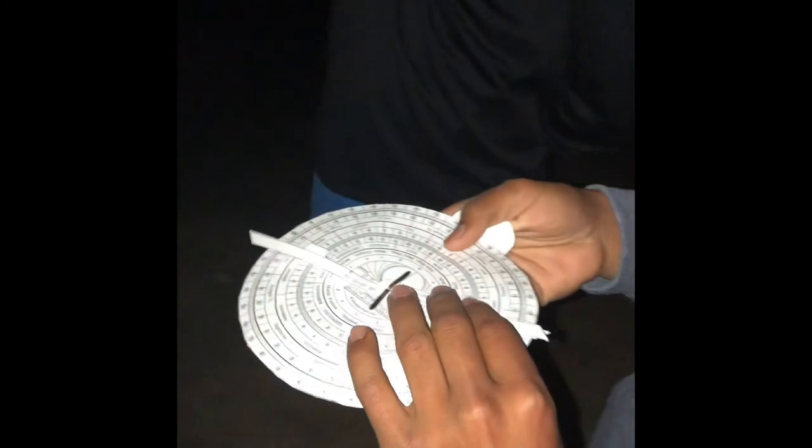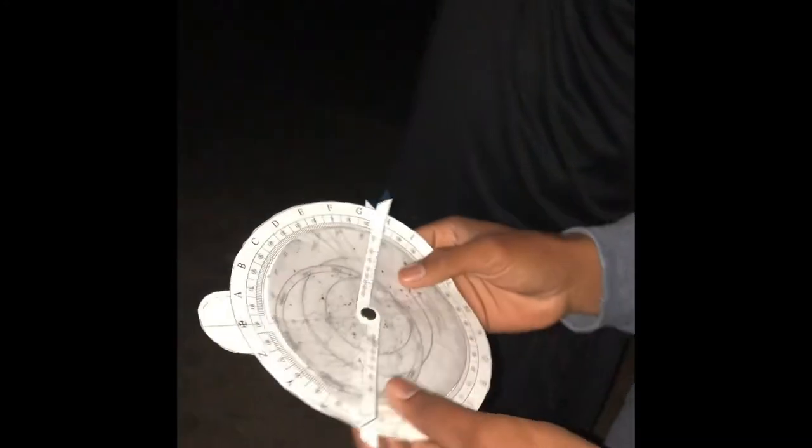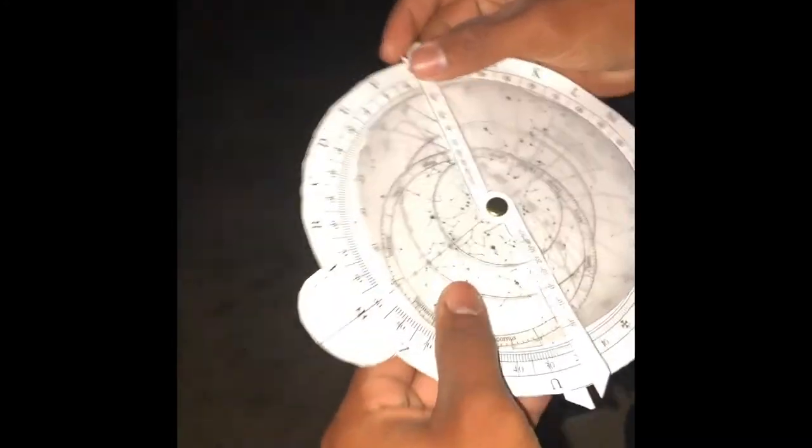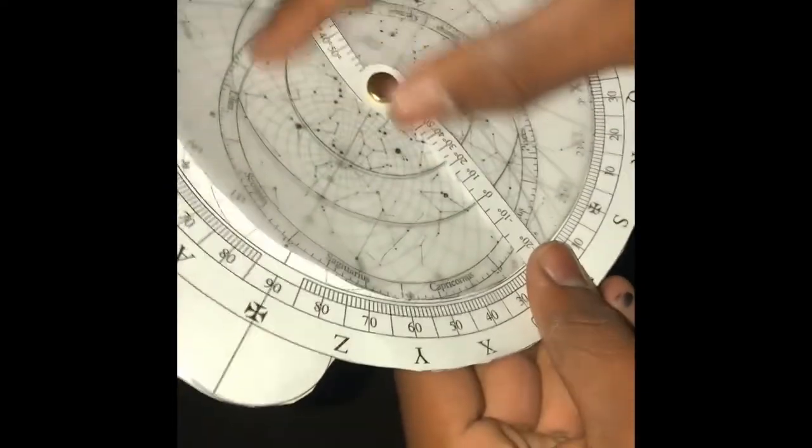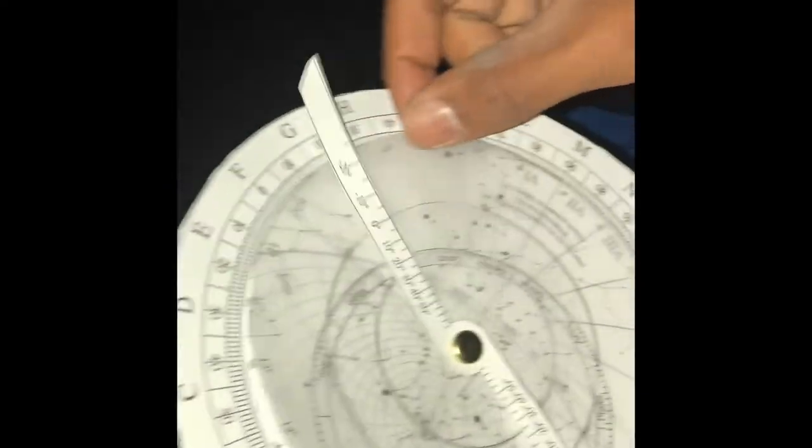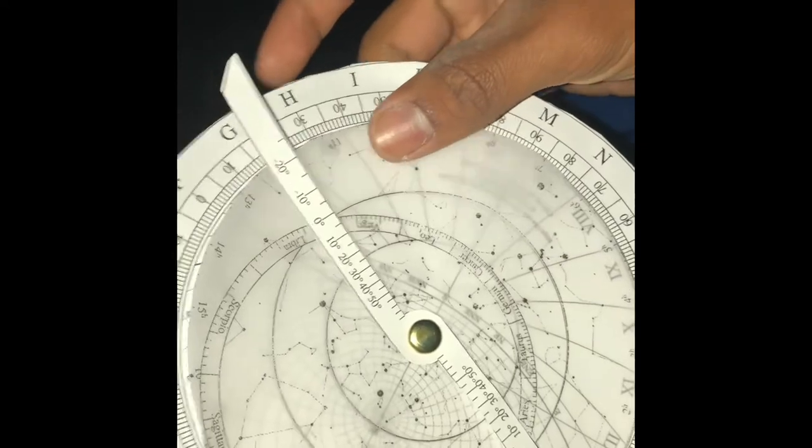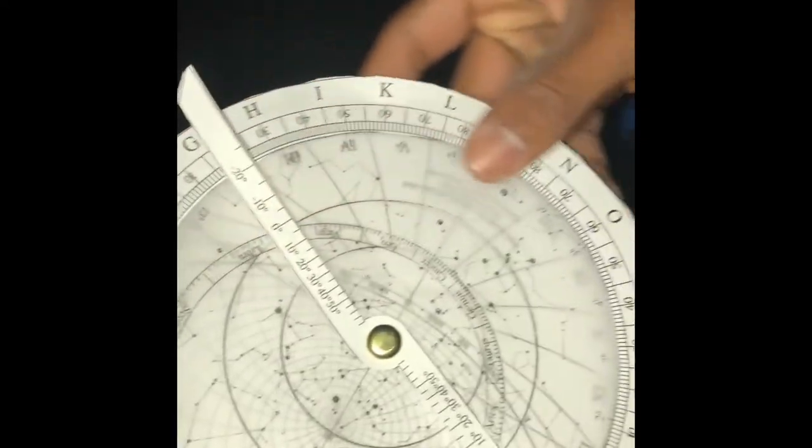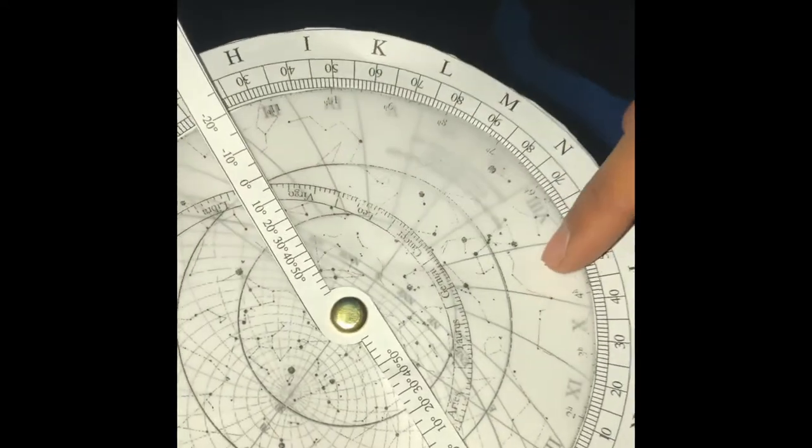So then what we know previously, right, is that using Aries today is 20 degrees. So if we come over here and we use 20 degrees, and since the sun rises on the east, it sets on the west, we're going to spin it right around there, right? So then there's Draco.